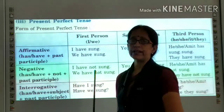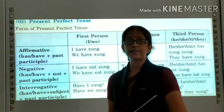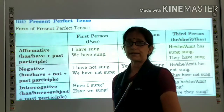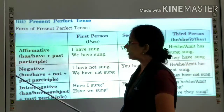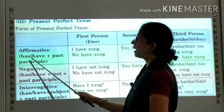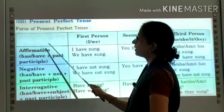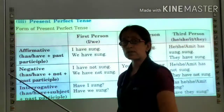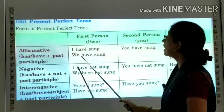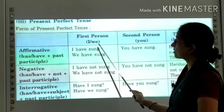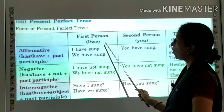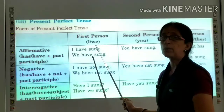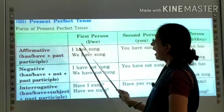This past participle is used in the perfect tense. Any of the perfect tenses — whether it is present, past, or future — we have to use the past participle with the helping verb have or has. This is the affirmative sentence, meaning it is the positive perfect tense sentence. For example: I have sung. This form of the verb is the third form of the verb, or the past participle.